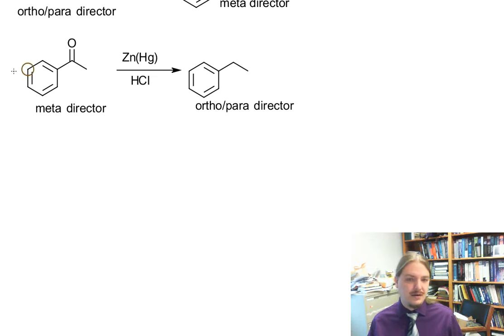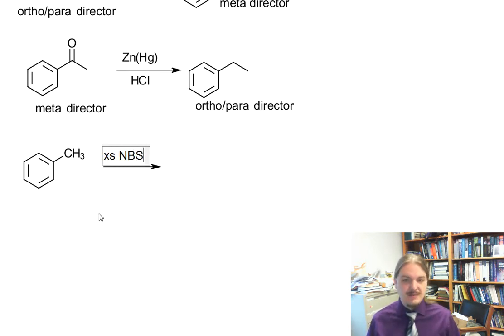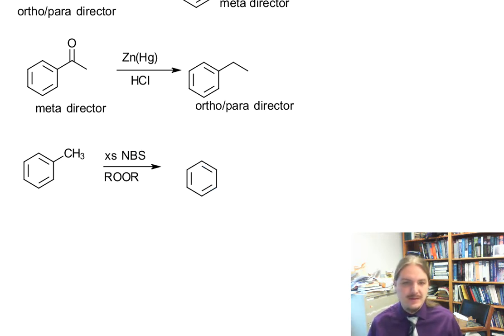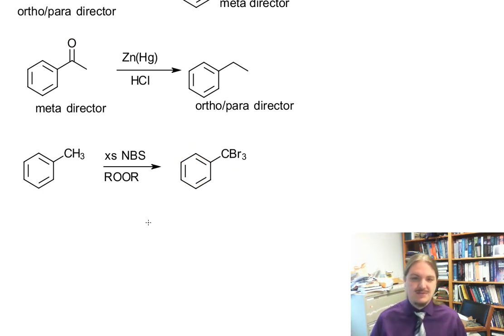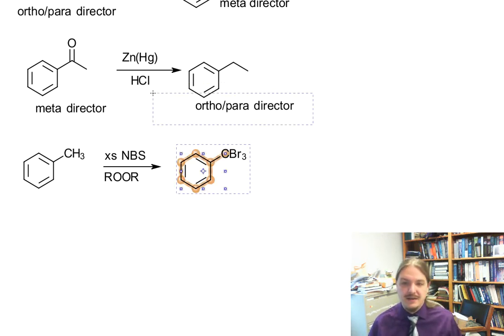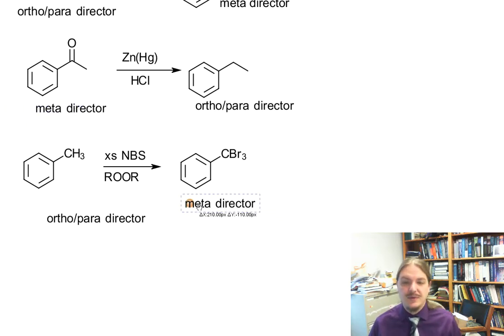Another example, again with the methyl group: the methyl group can be repeatedly halogenated using excess N-bromosuccinimide and appropriate conditions like a radical initiator, UV light, etc. We don't often talk about these types of reactions in cases where we want to generate lots of halogen substitutions, but it certainly can be done. The alkyl group is an ortho-para director, and the trihalomethyl group is a meta-director.